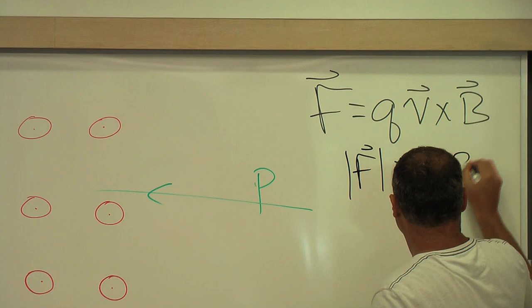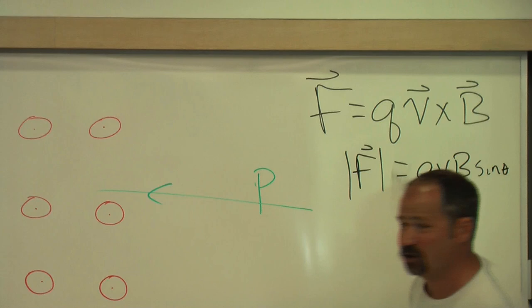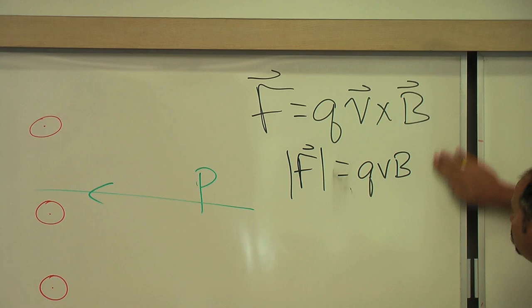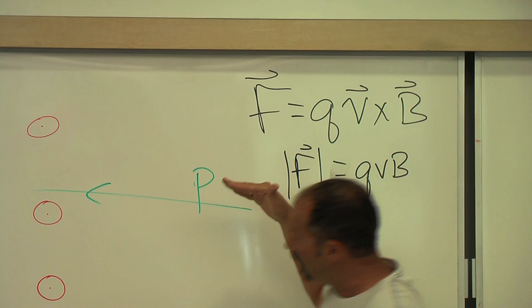And sine theta, where this is the angle between the two. Now, here we have it coming at a right angle. The magnetic field's going this way, proton's going that way. Sine of 90 degrees is 1, so for our situation, it's simply this. That's the magnitude of the force that will act on the particle as it enters the magnetic field.